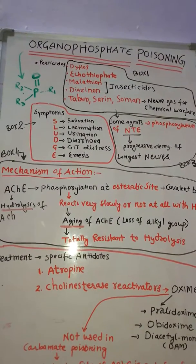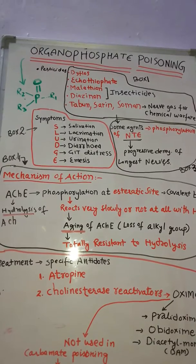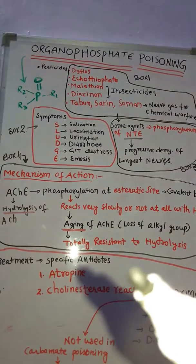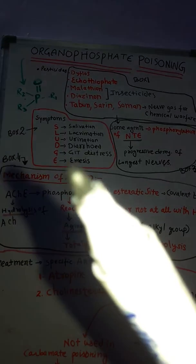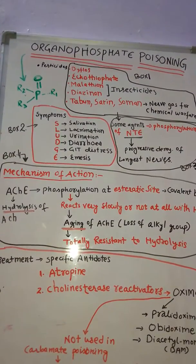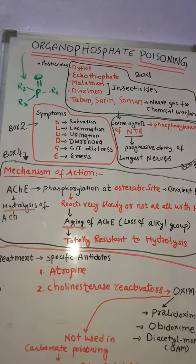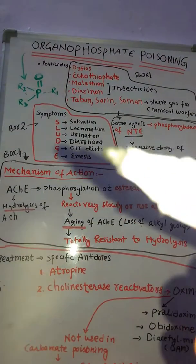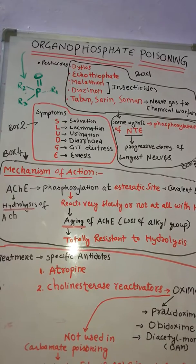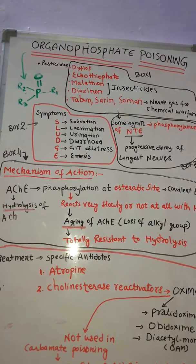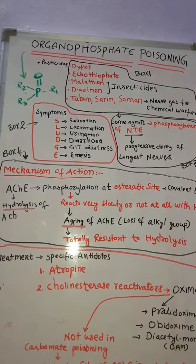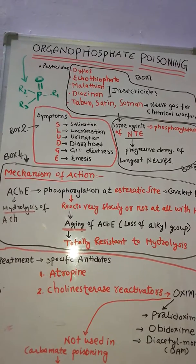The symptoms patients present with in organophosphate poisoning can be remembered by the mnemonic SLUDGE: S for salivation, L for lacrimation, U for urination, D for diarrhea, G for GIT distress, and E for emesis.